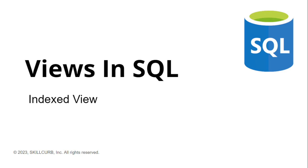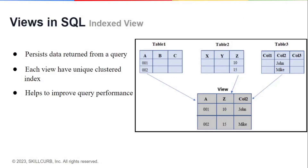Hi, I am Aliza Tanvir from Skillcurb. The main advantage of using the index view is that it helps to improve query performance. If we have a query with a lot of joins, sub-queries, and different functions, an index view can combine all of those tables into a single result set, so the user or application can query the index view itself rather than querying all the individual tables separately.